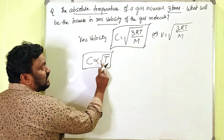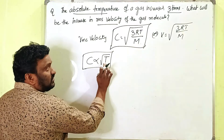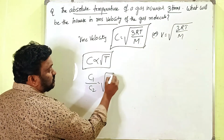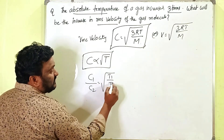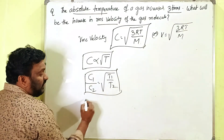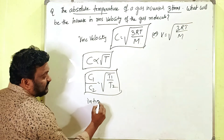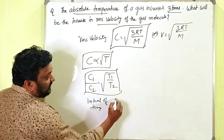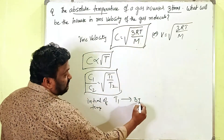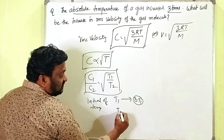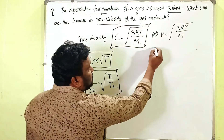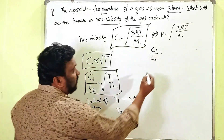From this proportionality, we can write: c1/c2 = √(T1/T2). This is the formula we are going to use for the solution. The initial absolute temperature is T1. Since it is raised to three times, T2 = 3T1.